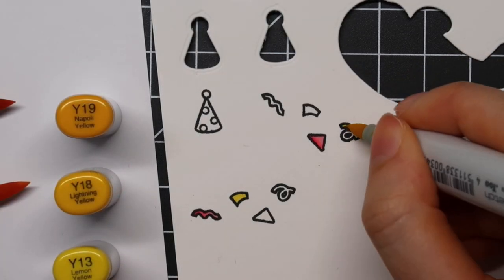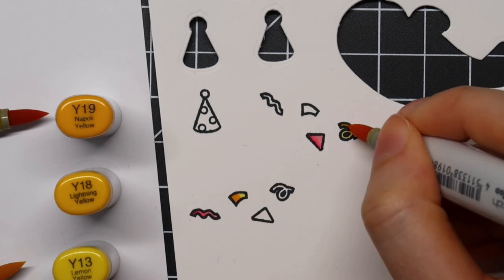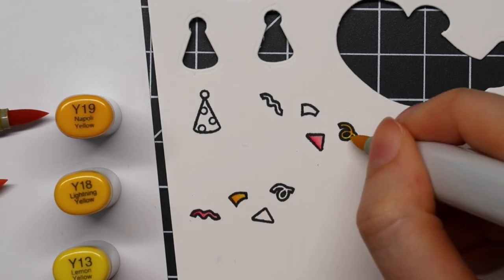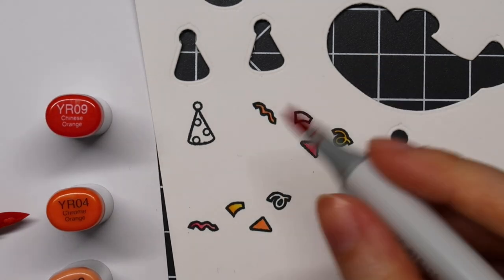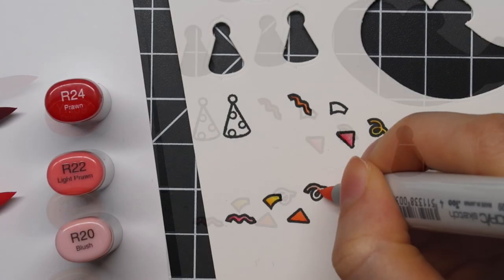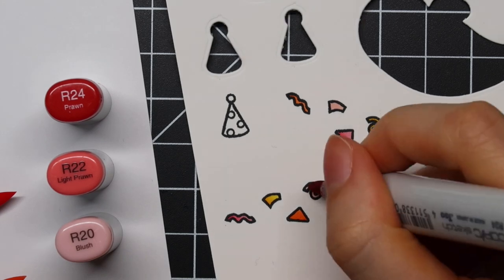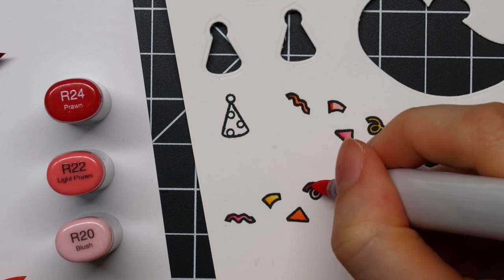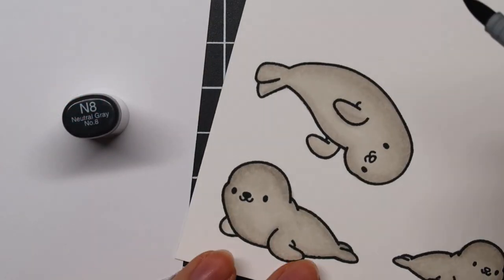Then for the confetti, I'm using different shades. I'm using some pinks, yellow, I'm also using orange, and then a really beautiful coral color. So for the orange, I'm using YR09, YR04, and YR02. Then for the red, I used R24, R22, and R20.